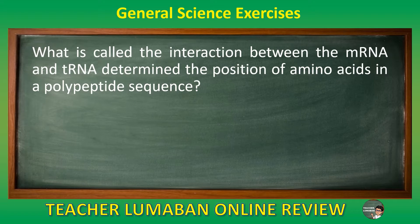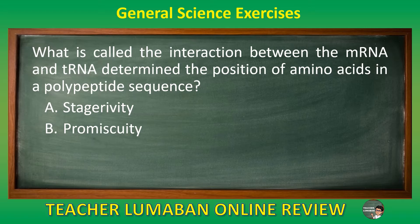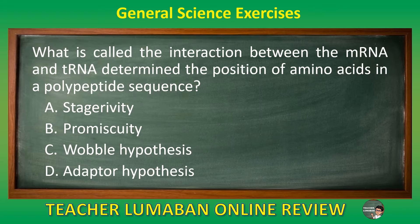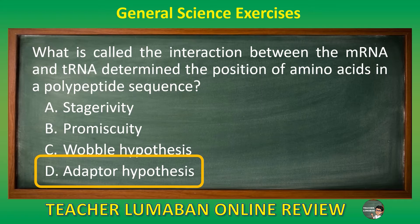What is called the interaction between the mRNA and tRNA that determines the position of amino acids in a polypeptide sequence? Letter A stage erivety. Letter B promiscuity. Letter C wobble hypothesis. Letter D adapter hypothesis. The correct answer is letter D, adapter hypothesis. The interaction between the mRNA and tRNA that determines the position of amino acids in a polypeptide sequence is called the adapter hypothesis.